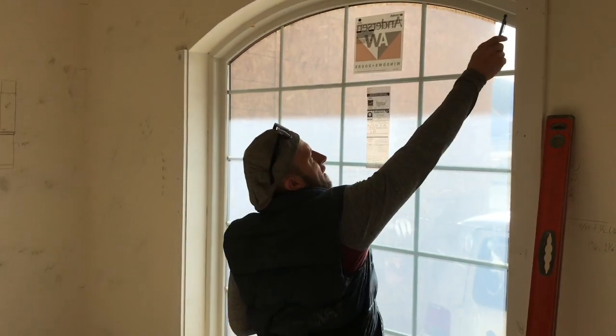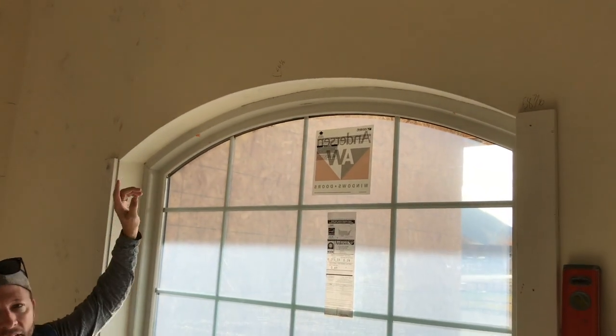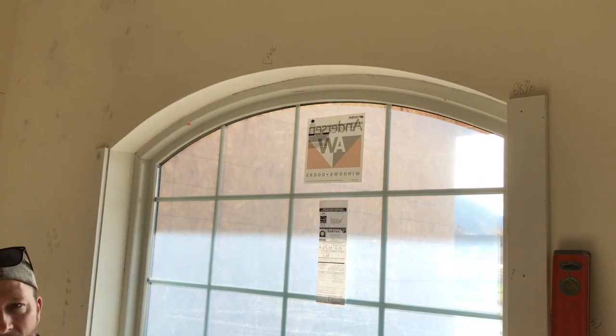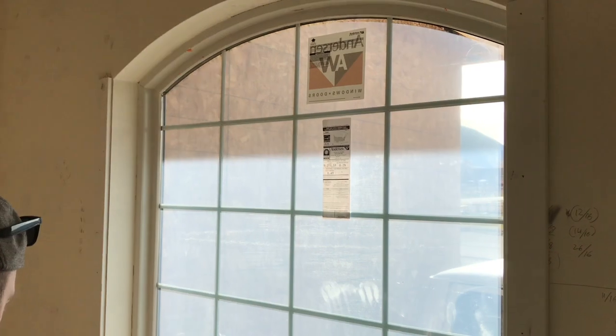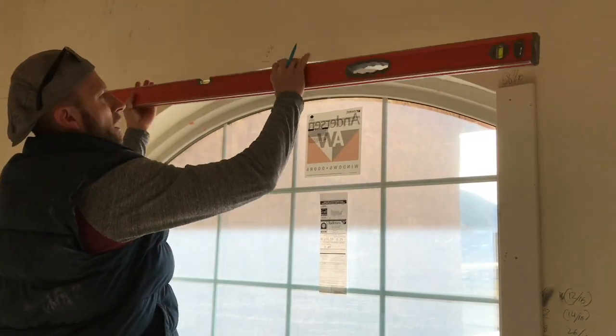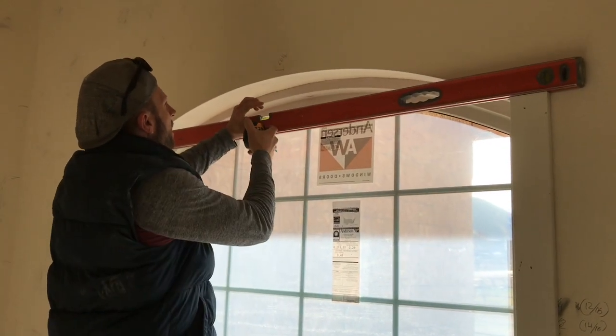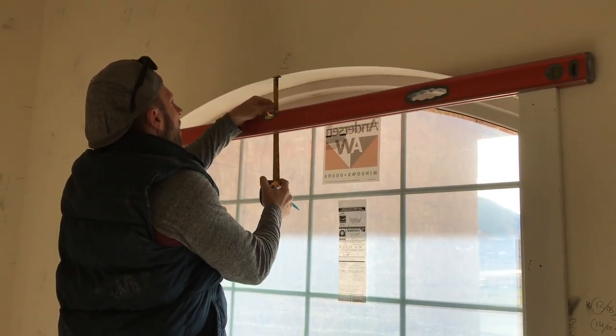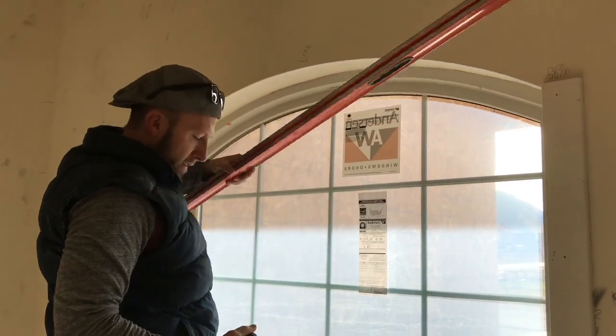We need to know the distance from this point to this point, and we figured that out to be 58 and 7/8 of an inch. Then we need to figure out the height of the line between those two points up to the top of that arch, and that is 7.5 inches for the top of that arch.